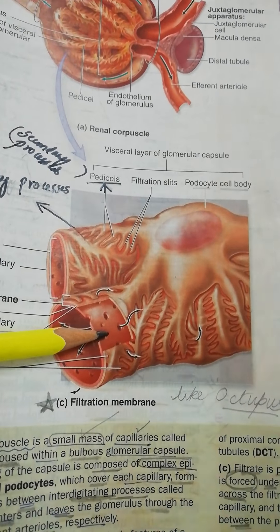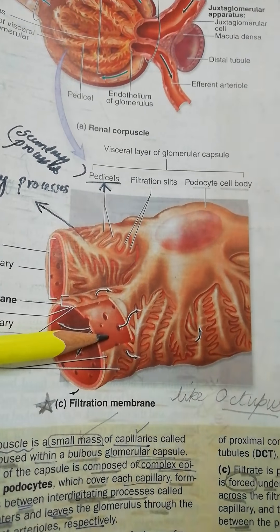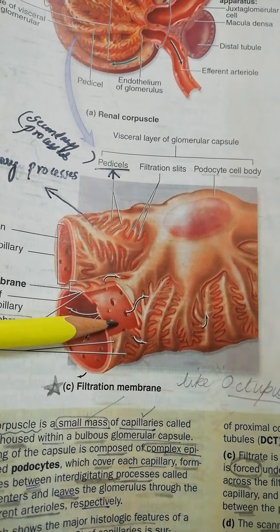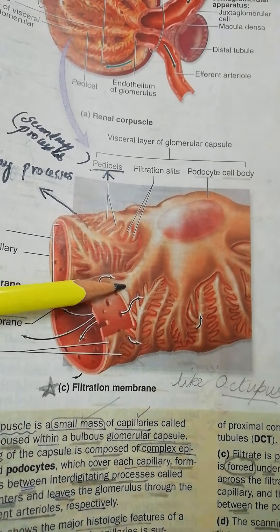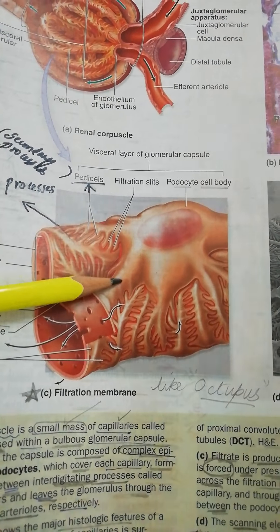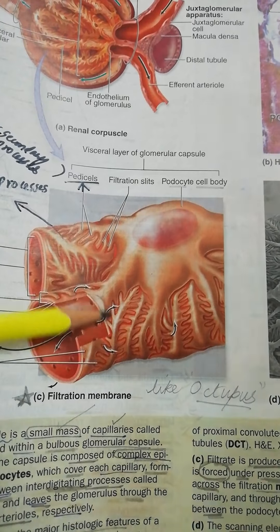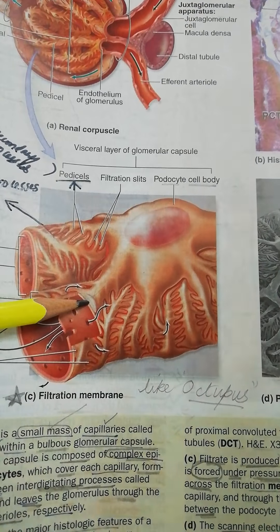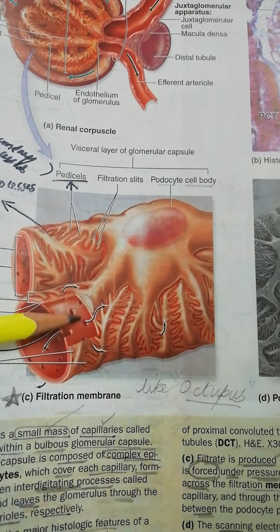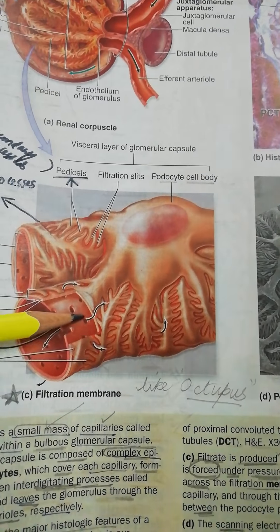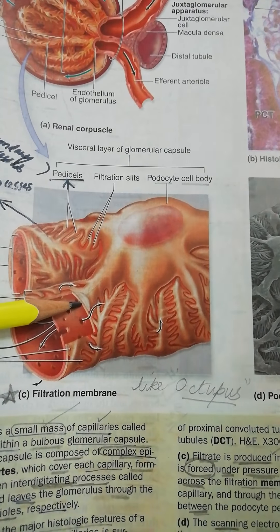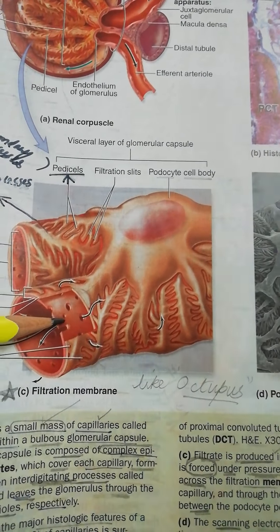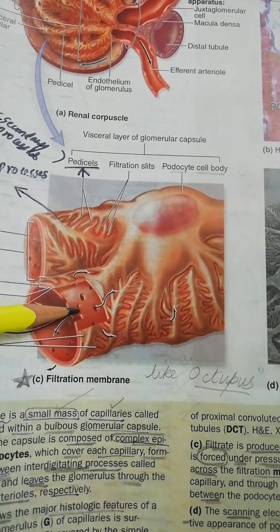These structures form the filtration barrier, also called the glomerular basement membrane. The filtration barrier comprises: first, the podocytes with pedicles forming a zipper-like structure; they rest on their basal lamina, which then meets the basal lamina of the capillary endothelium and fuses to form a common basal lamina. The squamous endothelial cells of the capillaries form the third component of this filtration apparatus.